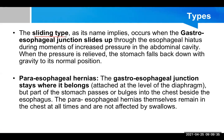The sliding type, or Type 1, occurs when the gastroesophageal junction or lower esophageal sphincter slides up through the esophageal hiatus during moments of increased pressure in the abdominal cavity. When the pressure is relieved, the stomach falls back down with gravity to its normal position. Intra-abdominal pressure is high during straining, weight lifting, inspiration, obesity, pregnancy, and various intra-abdominal diseases — so this sliding type of hernia is very common.